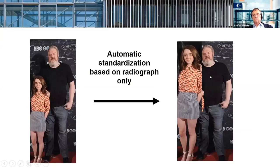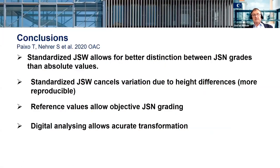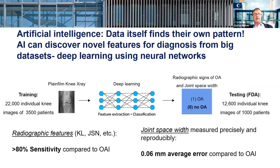So this is what we actually did — we standardized the joint space, which allows better distinction especially when it comes to narrowing grades, and it cancels out variation due to height differences, giving more accurate numbers to compare with. But as I mentioned, there is some bias in what data you create and put into a machine to make such distinctions.